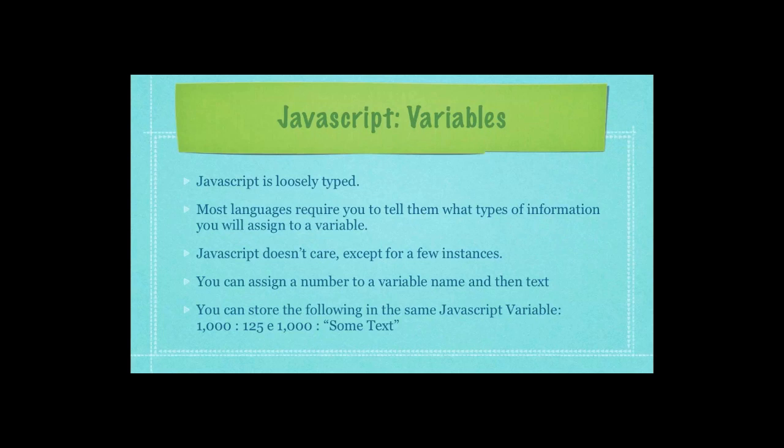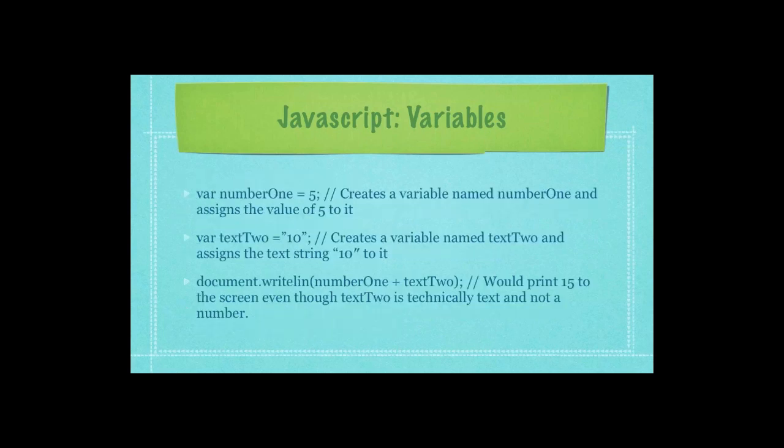The number 1,000, which in most languages would be considered an integer. And you have an exponent with 1,000 zero to be considered either a float or a double. And then you have actual text. All of those things can be stored in one Java variable.